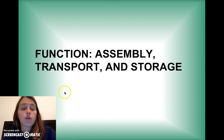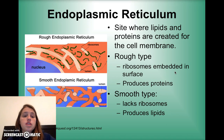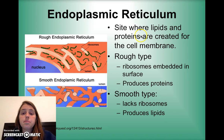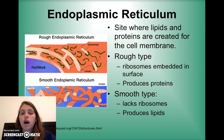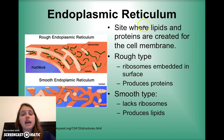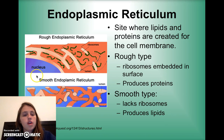The next set of organelles functions to assemble, make, transport, and store things. The endoplasmic reticulum is the site where lipids and proteins are made for the cell membrane. The rough endoplasmic reticulum has ribosomes all over it and is where proteins are made. The smooth endoplasmic reticulum does not have ribosomes and produces lipids, or fats.